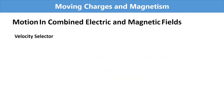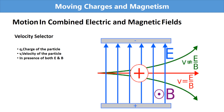Now we discuss the motion of a charged particle in a combined electric and magnetic field. First, we discuss the velocity selector. A velocity selector is an arrangement that helps us identify particles with a single particular velocity — it selects all particles moving with a specific velocity. We will study crossed electric and magnetic fields: when the electric field and magnetic field are perpendicular to each other, they are known as crossed fields.